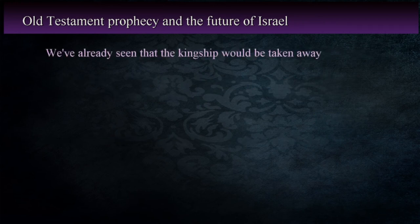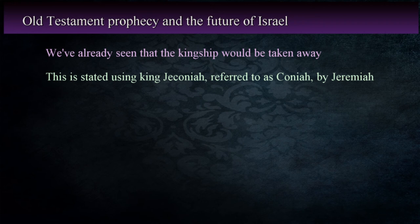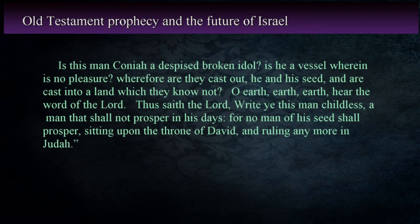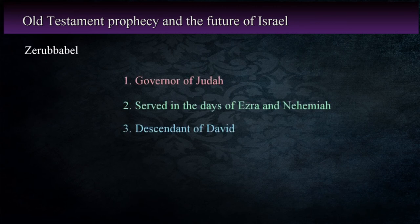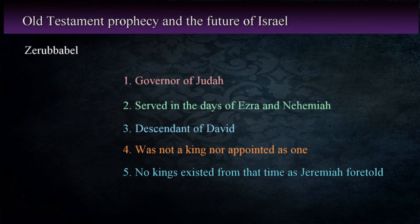I've already mentioned that the kingship would be taken away, stated in a figurative fashion using Jeconiah, referred to as Coniah, in Jeremiah 22:28-30 — that no man of his seed shall prosper sitting upon the throne of David and ruling any more in Judah. Zerubbabel, the governor of Judah during the days of Ezra and Nehemiah, was a descendant of David, but wasn't a king nor appointed as one. From that time forward, there were no kings of the line of David, just as Jeremiah foretold.